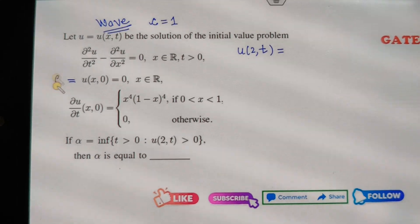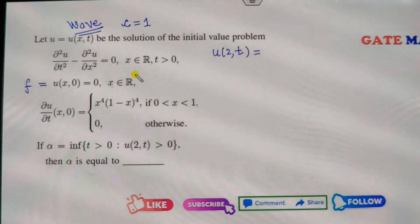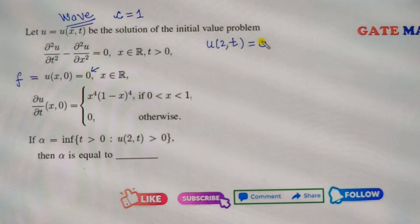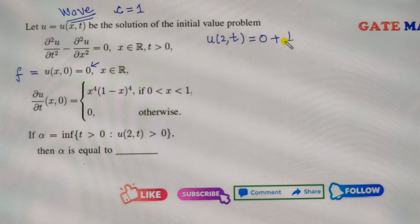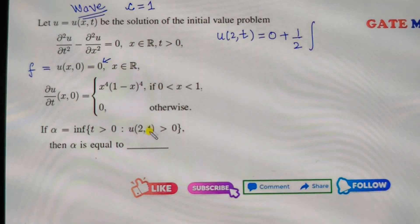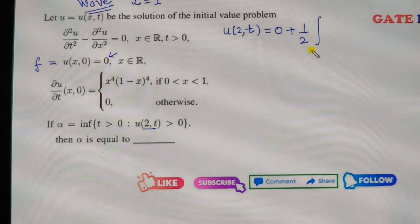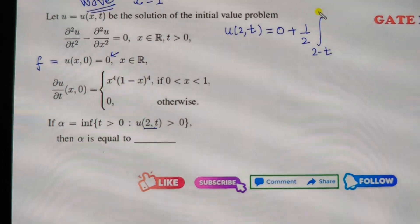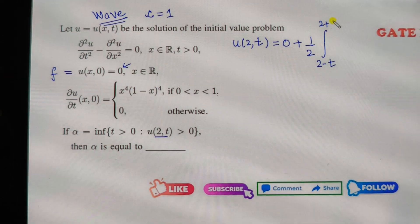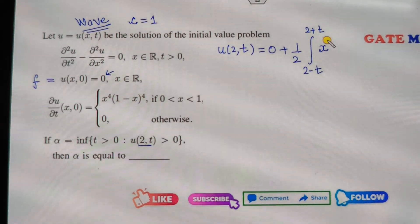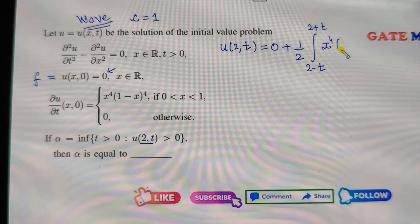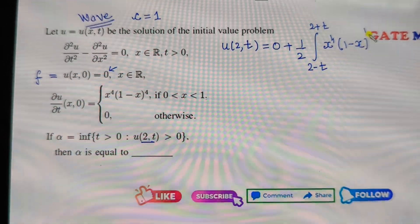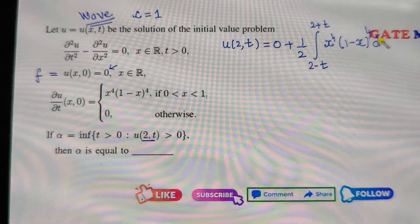Since c is 1, I call this my f. So since this number is 0, plus 1 over 2, times (2 minus ct) — so that is (2 minus t) to (2 plus t) — of x raised to the power 4 times (1 minus x raised to the power 4) dx.